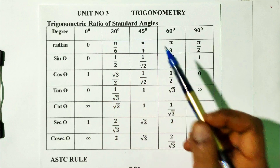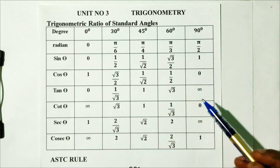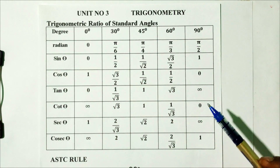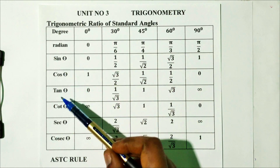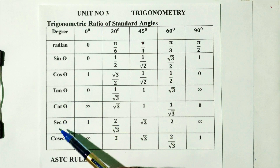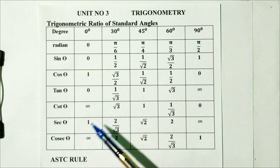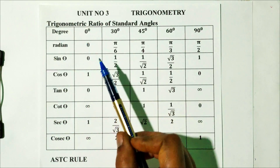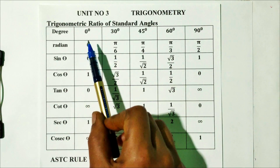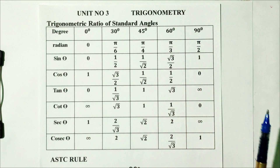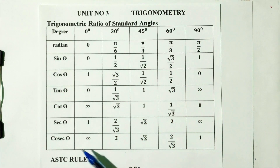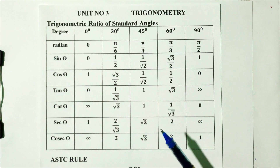Trigonometric ratios of standard angles — this is very important. We have sin theta, cos theta, tan theta, cot theta, sec theta, cosec theta for angles: 0, 30, 45, 60, and 90 degrees. Let's practice these values.